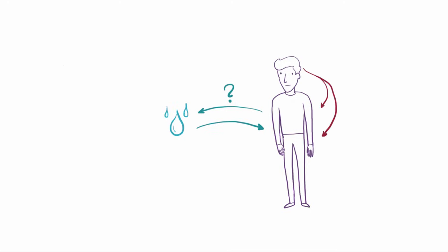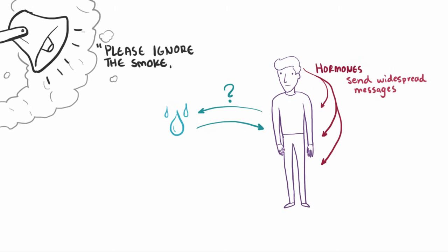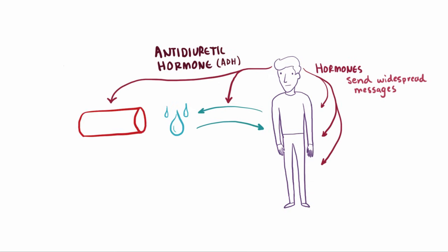Usually your body uses chemicals called hormones to send widespread messages, kind of like how the PA system at school tells everyone to ignore the smoke billowing out of the science wing. The antidiuretic hormone, abbreviated as ADH, is the hormone that controls water retention in the body. It also constricts blood vessels, and incidentally the vasoconstrictor drug called vasopressin is just ADH.